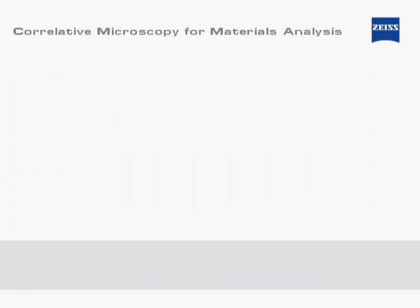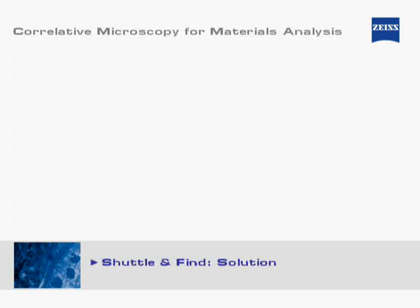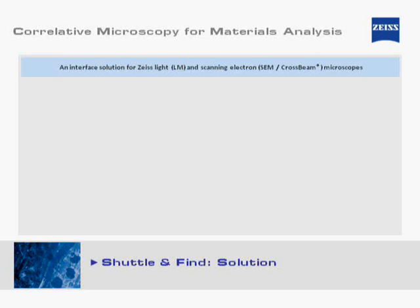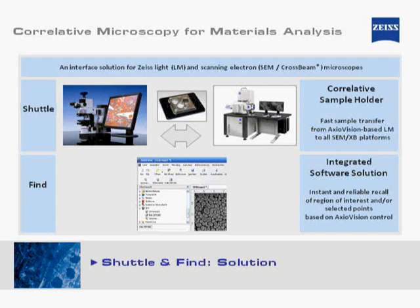In light microscopy, scientists can deploy a variety of contrast methods to observe structures of interest on their samples. Depending on the contrast method chosen, regions of interest can easily be identified. Shuttle and Find enables scientists to quickly and seamlessly relocate those regions of interest after a sample transfer to the electron microscope, which permits further research with much higher resolution and additional analytical methods such as energy dispersive x-ray spectroscopy for characterization of the elemental sample composition.